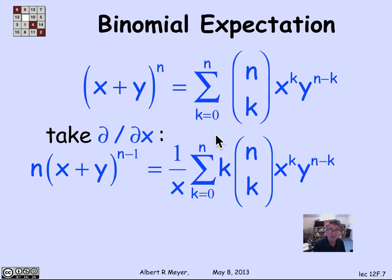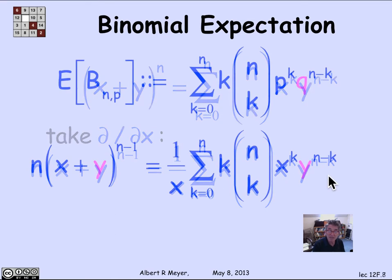So by differentiating the binomial formula, we get the following formula for this sum that is starting to look just like the expectation of B_{n,p}: 1 over x times the sum from k equals 0 to n of k times n choose k times x^k times y^(n-k).